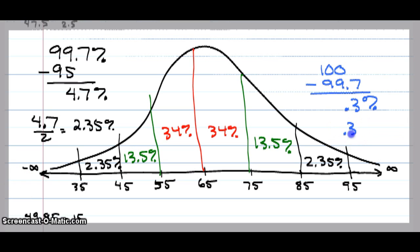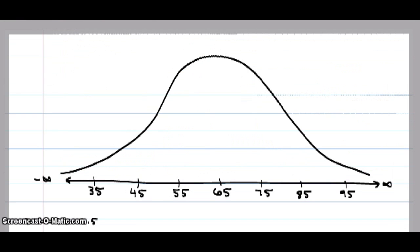Divide that 0.3% in half. I have 0.15% in each tail. That's the empirical rule. So let's do a problem with it.